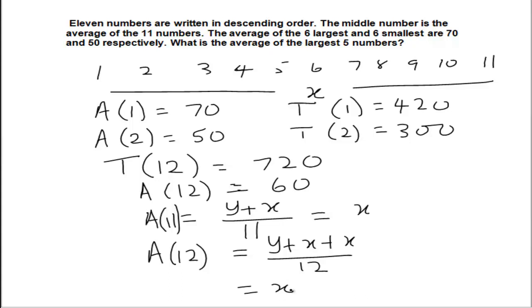But the question was to find the average of the largest 5. So the average of the largest 5 will be 420 minus 60, which is 360 divided by 5, and that is 72.